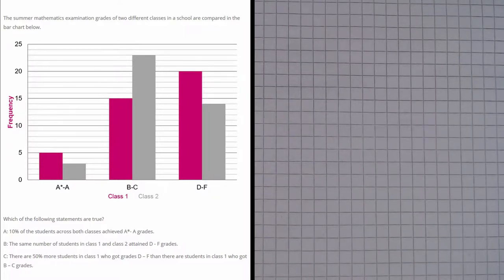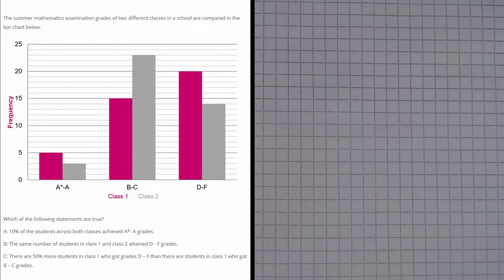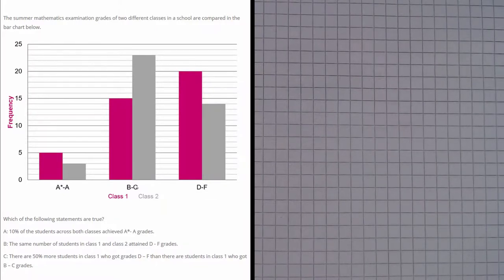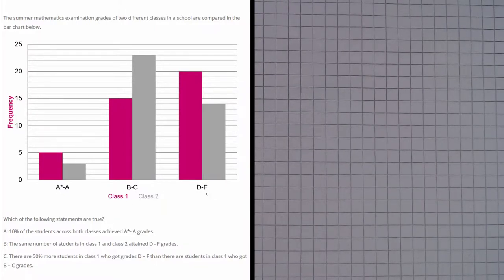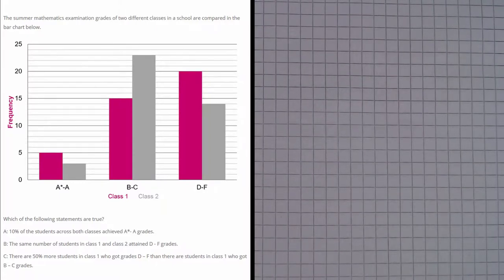In this question we are given a bar chart that compares the summer mathematics examination grades of two different classes in a school. We can see that the grades are grouped as follows: A star to A, B to C, and D to F.